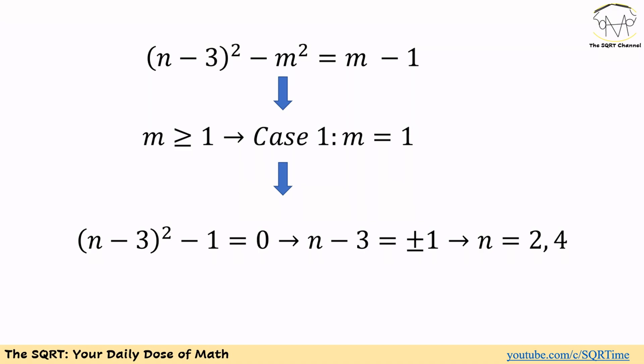We know m is a positive integer, so m cannot be 0. The minimum value that we have is 1. Let's start with 1. We set m is equal to 1 and then we will have n minus 3 to the power of 2 minus 1 is equal to 0. This leads to n minus 3 to the power of 2 is equal to 1, or n minus 3 is equal to plus or minus 1. And we will have n is equal to 2 or 4.